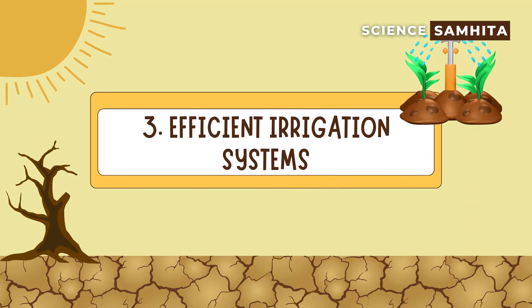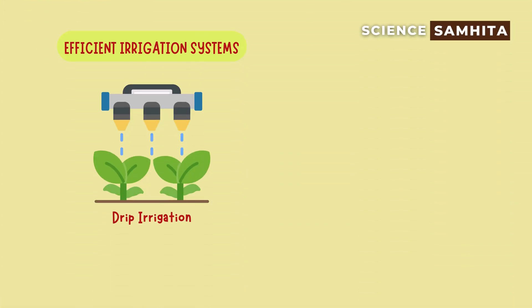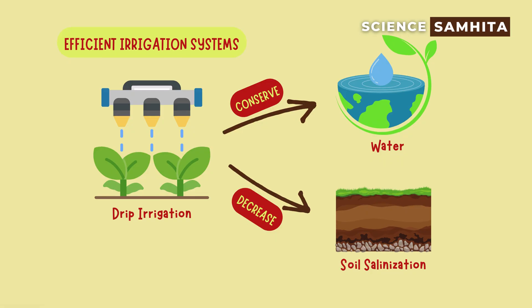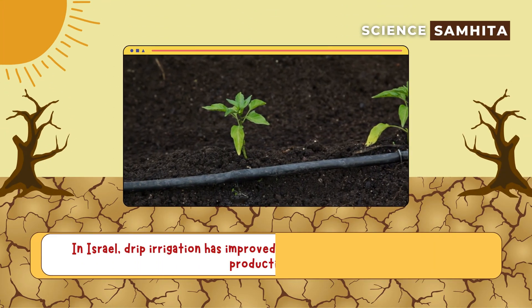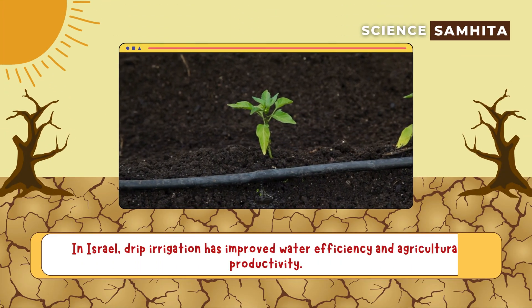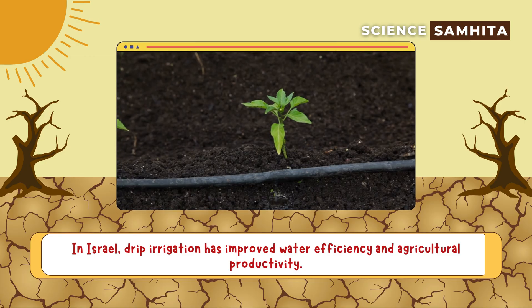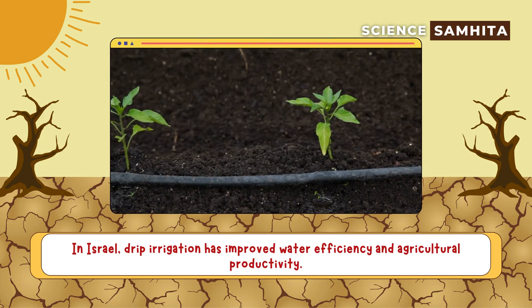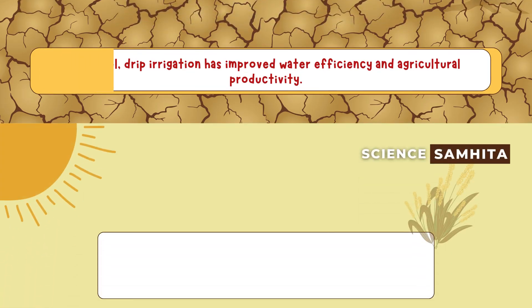Third, efficient irrigation systems. Using irrigation systems like drip irrigation helps conserve water and decrease soil salinization. For example, in Israel, drip irrigation has improved water efficiency and agricultural productivity.